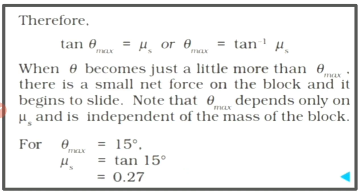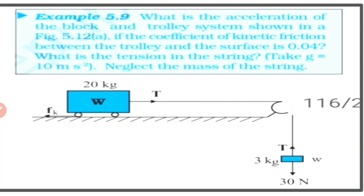That is the answer to Example 5.8 — the same steps as for the angle of repose derivation. Now coming to Example 5.9: what is the acceleration of the block and trolley system shown in Figure 5.12a, if the coefficient of kinetic friction between the trolley and the surface is 0.04? What is the tension in the string? Take g as 10 m/s² and neglect the mass of the string.